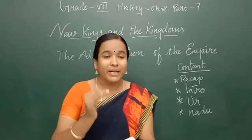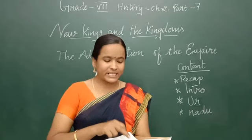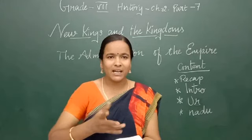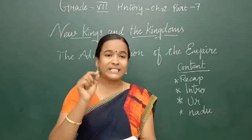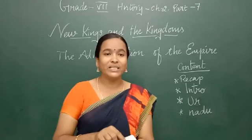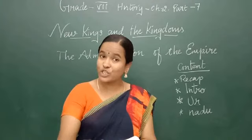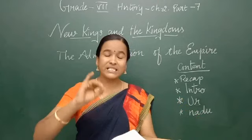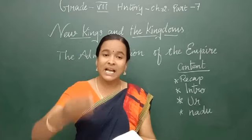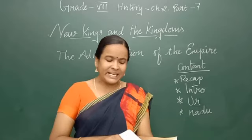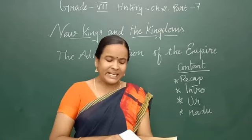Next is Brahmadeya — land gifted to Brahmans. Then Shalaboga — land for the maintenance of a school; shala means school. Next is Devadana, also called Tirunamattakani — land gifted to the temple. And Palli Chandam — land donated to Jaina institutions. So lands were known with different titles based on their purpose.